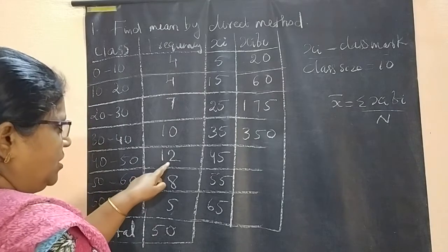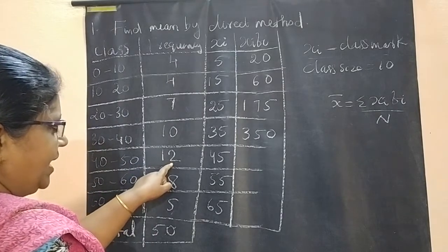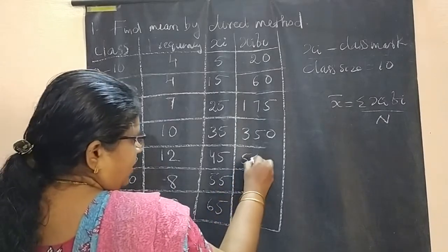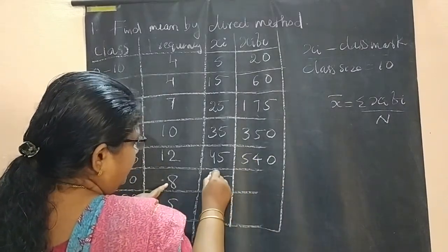45 × 12: 45 × 10 is 450, 45 × 2 is 90. So, 450 + 90 = 540.